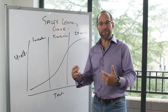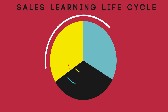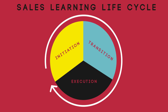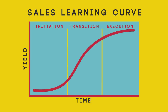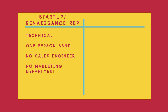How do we think about hiring for these different phases? Because they're very different in terms of the life cycle of a company, the type of salesperson you bring in is actually very different. We think about the initiation phase as hiring what I would call a renaissance rep. This person is probably technical, used to being a one-person band. There's probably no sales engineer, no marketing department, really nothing — so we think of this person as a lone wolf trying to drum up business for the organization.